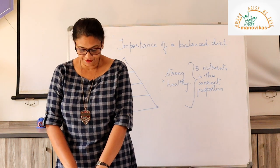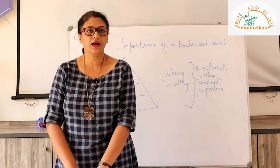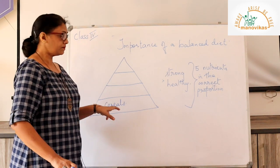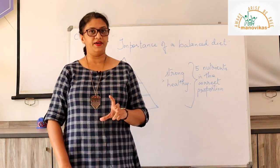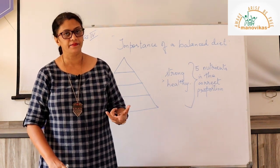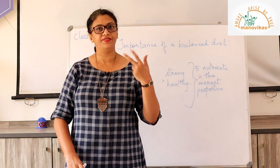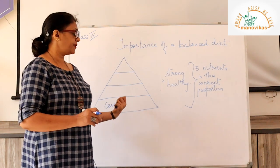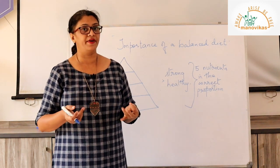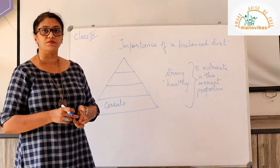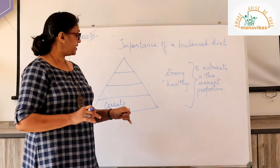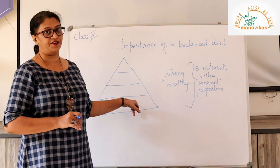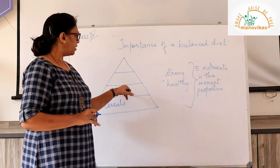At the bottom of the pyramid we have food that is rich in carbohydrates — that is cereals. Food at the bottom of the pyramid has to be eaten in greater amount. Foods made from cereals include dosas, bread, and chapati. Growing children need to eat food rich in carbohydrates because carbohydrates give you energy.